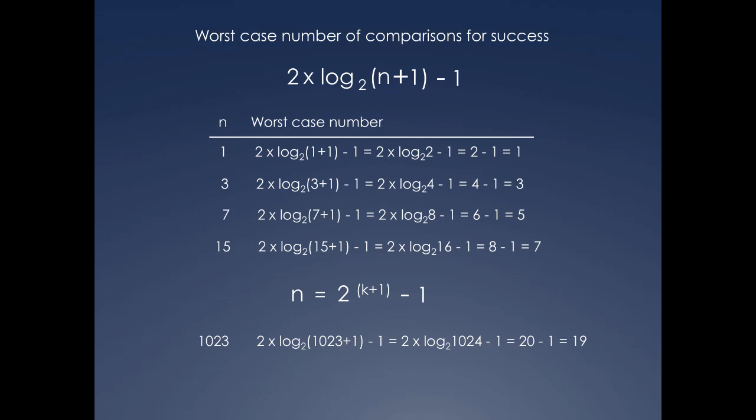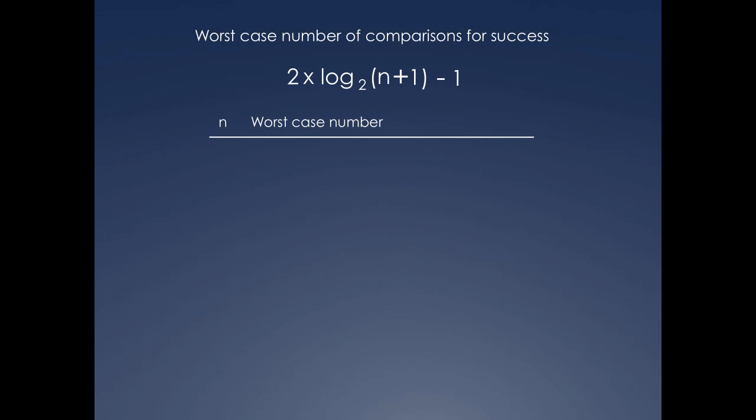So at this point, I'm sure you're asking, what happens when n is not the special kind of value? After all, binary search could be done on an array of any size, not just those that are of this particular form.